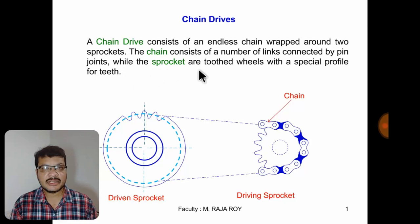Here you can notice the sprocket and this is the chain. These are the various links inside the chain.